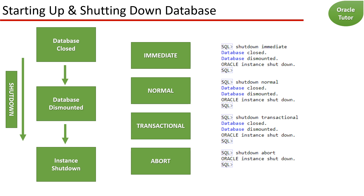The normal shutdown mode is the default shutdown mode if no mode is specified with the Shutdown command. In this mode, the Oracle server does not allow any new connections to be made. The server then waits for all currently connected users to disconnect before completing the shutdown. Once all users have disconnected, the database server writes any buffer data to disk, terminates any background processes, removes the SGA from memory, then closes and dismounts the database before shutting down the instance.